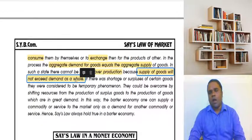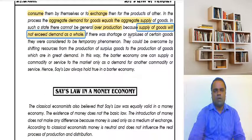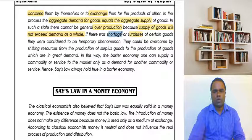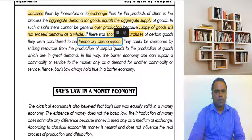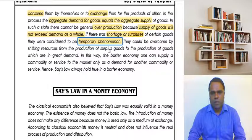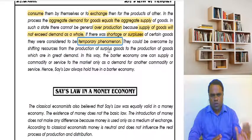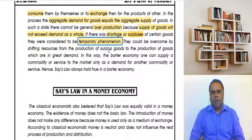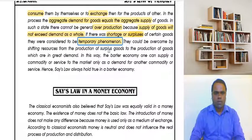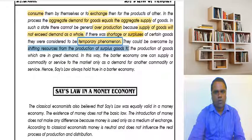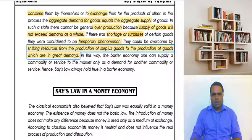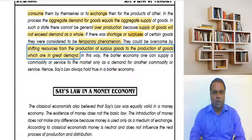If by chance there is a slight surplus or shortage, that is only a temporary phenomenon. For example, suppose a farmer grows rice on some land and wheat on some land. If he finds there is a shortage of wheat, he will shift his resources from rice production to wheat production — from the surplus good to the good in higher demand. He diverts resources to produce more of what is in greater demand.